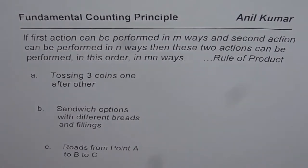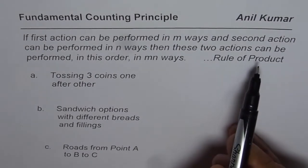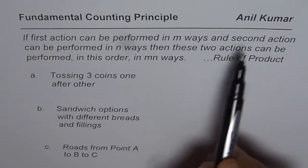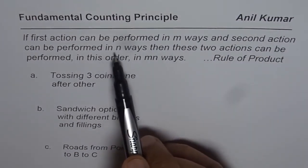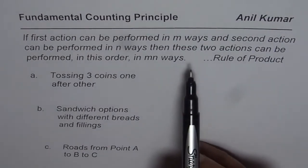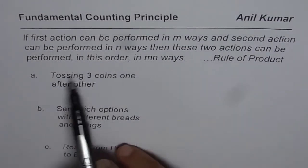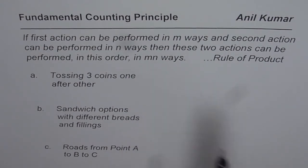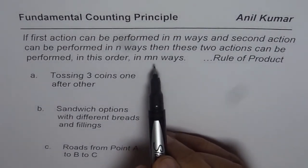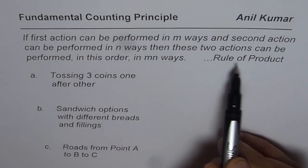This is also called the rule of product. It is important to note that this can be extended. If the first action can be performed in m ways, the second in n ways, and the third in p ways, then the three actions can be performed in m times n times p ways. You can continue multiplying, since we are multiplying all these ways to get the total number of possibilities. It is also called the rule of product.